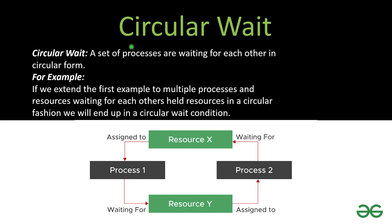Let's understand the last condition: circular wait. A set of processes are waiting for each other in a circular form. For example, if we extend the first example to multiple processes and resources all waiting for each other's held resources in a circular fashion, we end up in a circular wait condition.